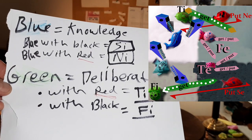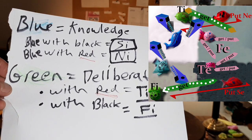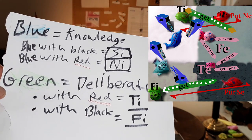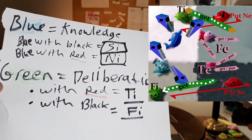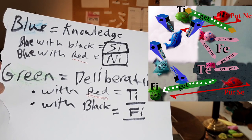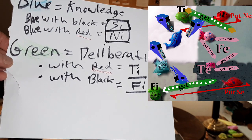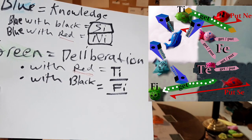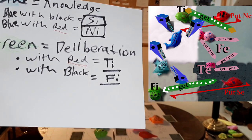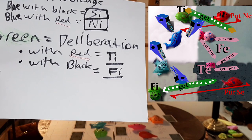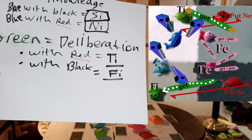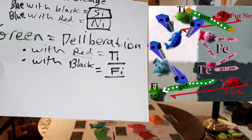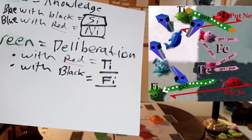First, a legend. The blue fish are knowledge functions. Blue with black is SI. Blue with red is NI. The green fish are deliberation functions. Green with red is TI. Green with black is FI.